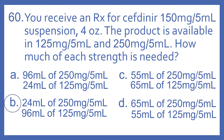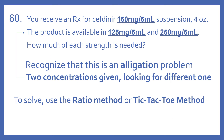The answer is B: 24 ml of 250 mg per 5 ml and 96 ml of 125 mg per 5 ml. We need to recognize that this is an allegation problem. We have two concentrations given and we're looking for a different one that falls in between those concentration amounts.